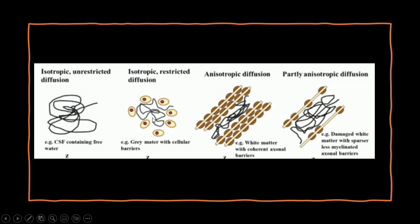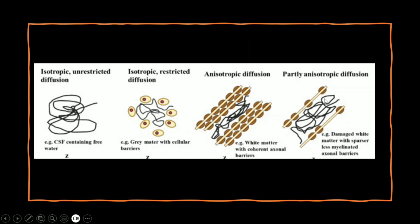In anisotropic diffusion, the water molecule movement is restricted by the myelin sheath and is direction dependent along the course of the tracts. If these white matter tracts are damaged, they again become partially direction dependent and partially non-directional dependent.